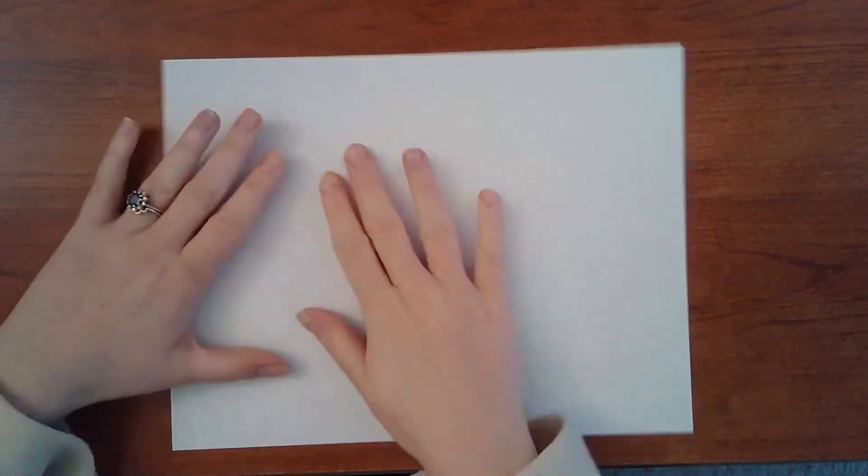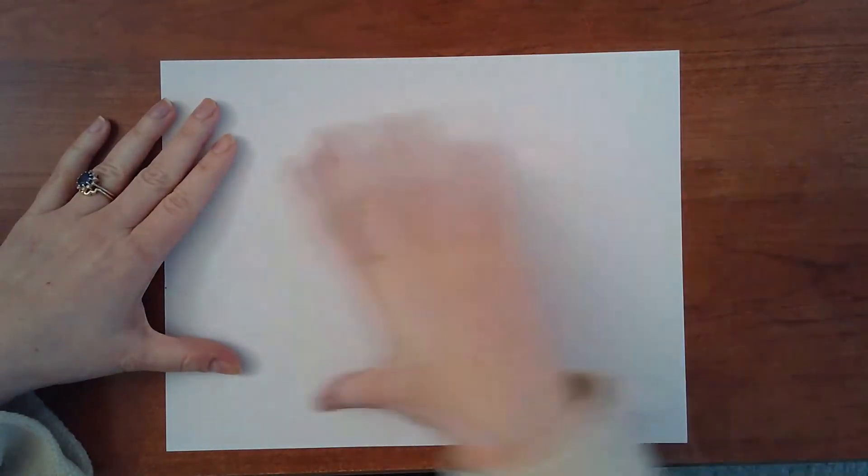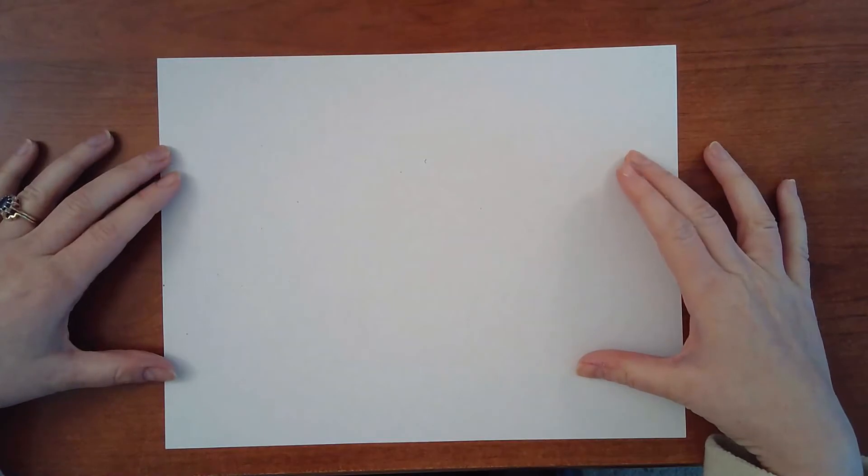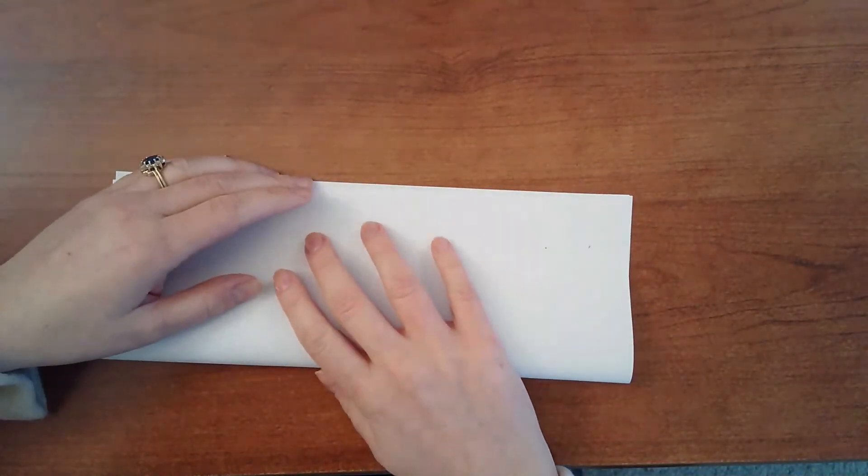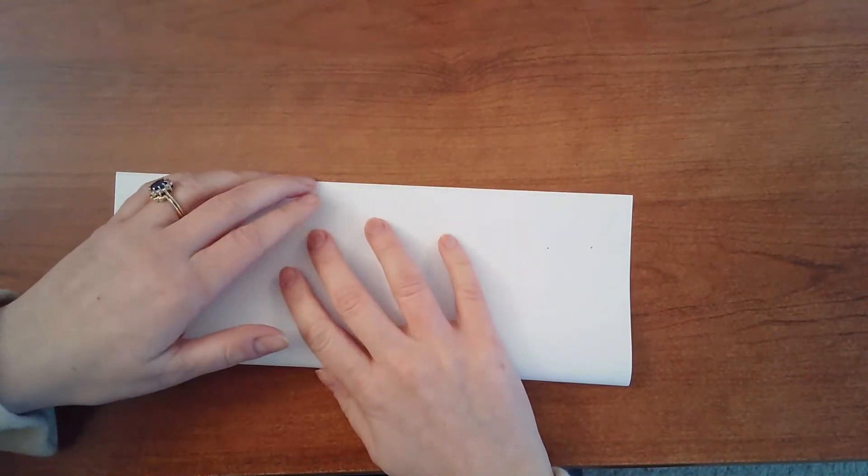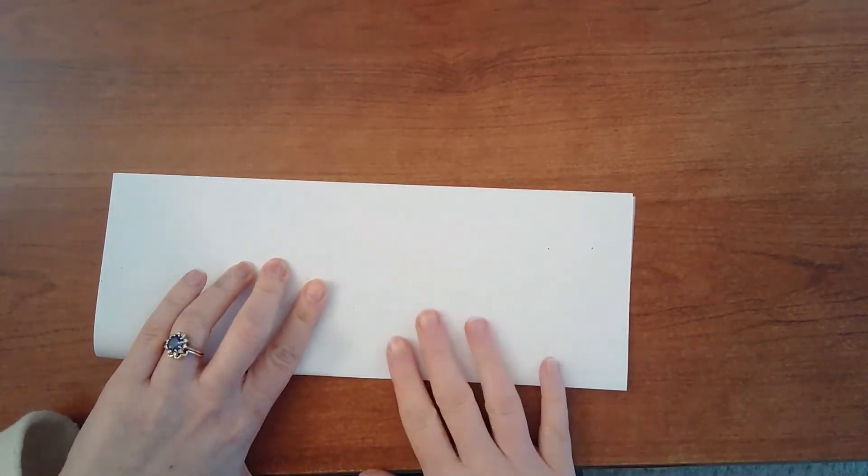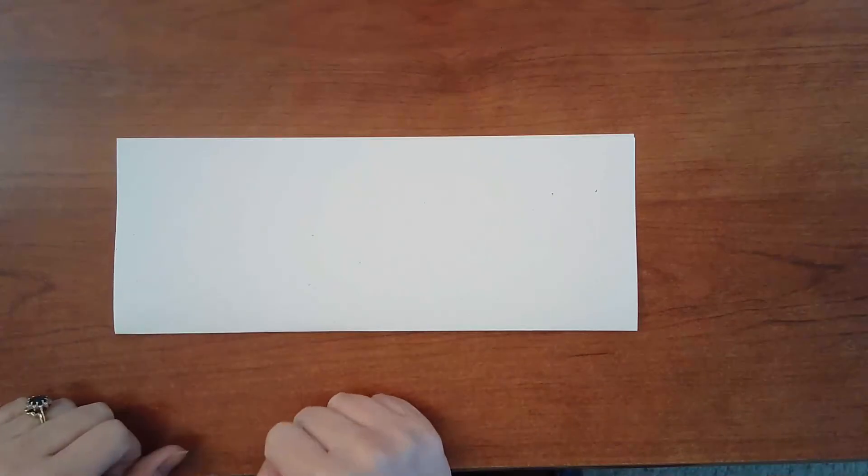So the first thing I want you to do is take your paper and put it the long way, the long way. We kind of call it like maybe the hot dog way. It looks this way, long way. And we're going to fold this in half the long way. It's really important that it's the long way. So how do we fold? We line up the corners, corner to corner. We line it up like this and then we press it. You try that. And you can pause the video if you need to.